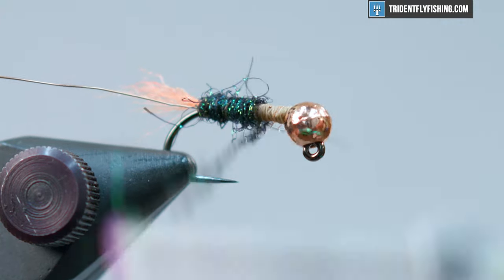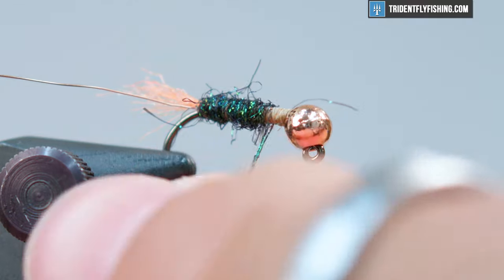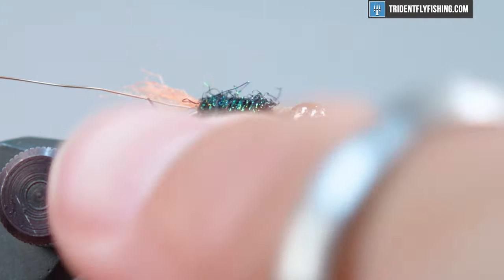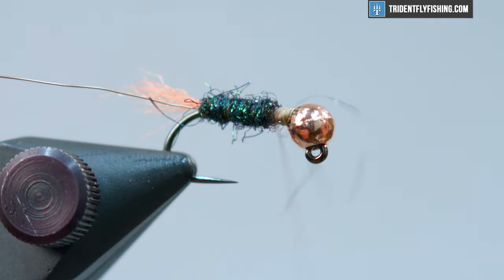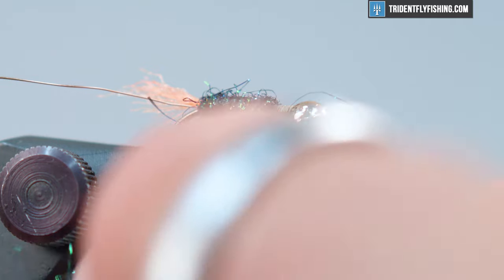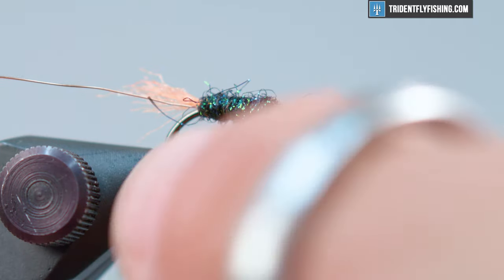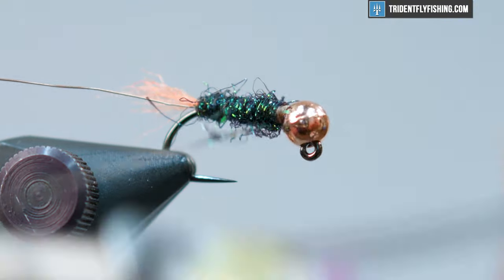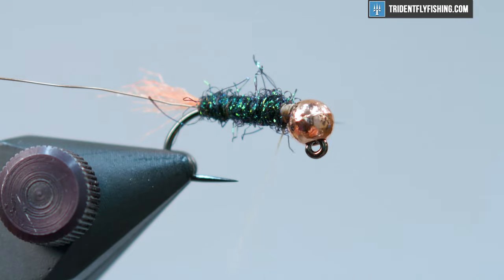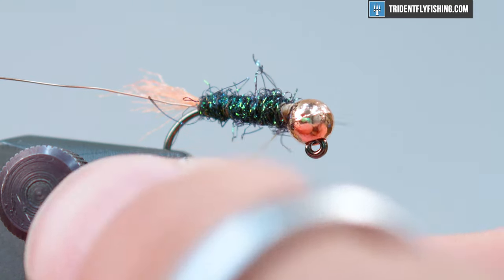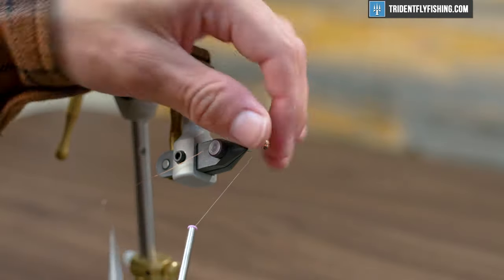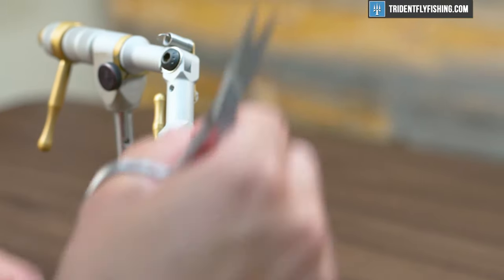You want to get as smooth and neat of a body as possible. Right now we're about 40% of the way up the hook shank. We can fatten that thorax area up and add some bulk. You'll see it getting just a little beefier in that thoracic area. We'll run that up to be just behind our bead. You'll see that nicely tapered profile.